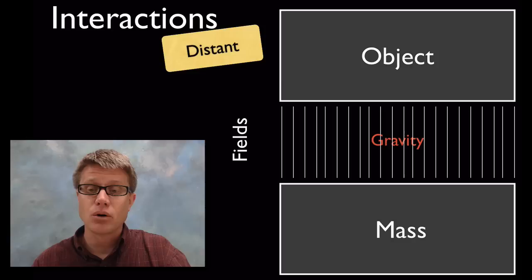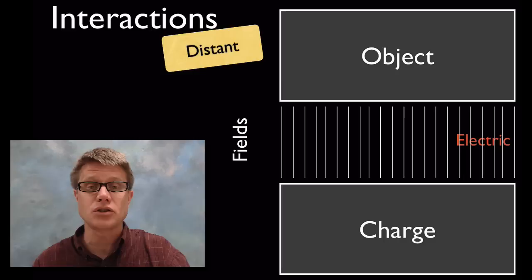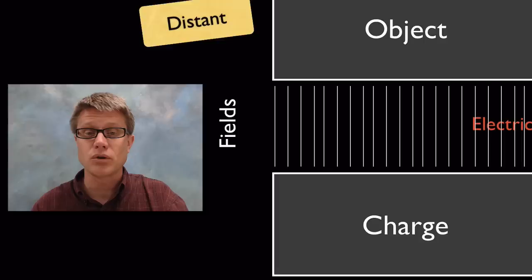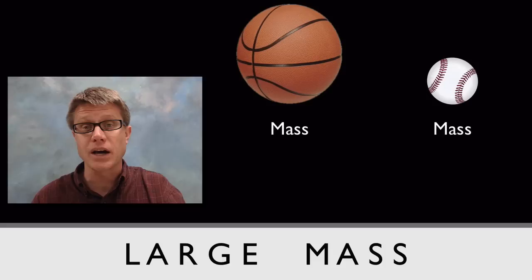We can test those fields using a test object. To see the strength of a magnetic field, simply use a magnet. For a gravitational field, use a mass; for an electrical field, use a charge. Just because you can't see these fields doesn't mean they're not real and incredibly important when looking at interactions.